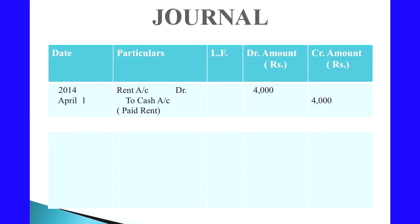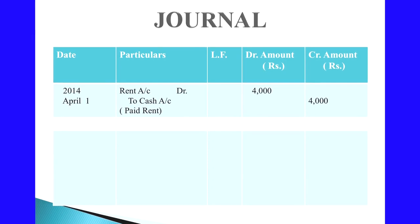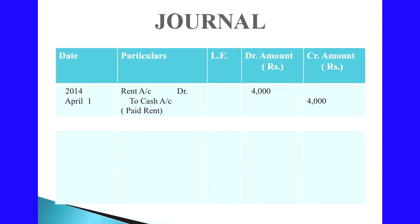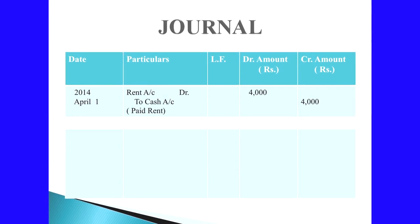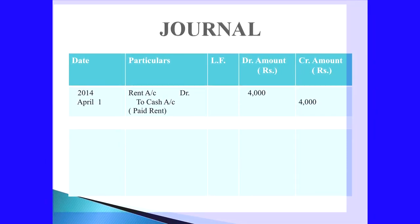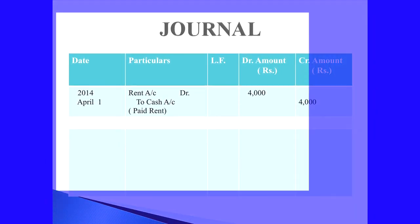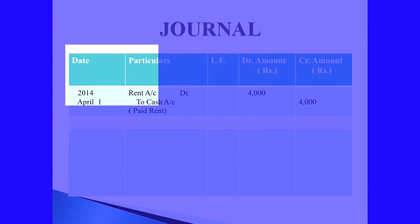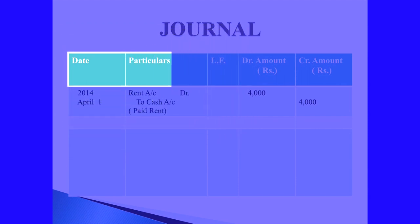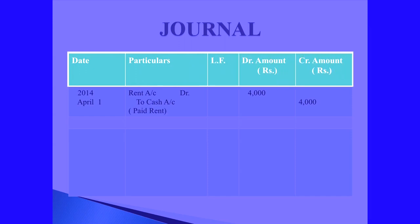In the slide, you can see the format of a journal. Every page of the journal has a particular format as given in the slide. It is a columnar book — each column is given a name: date, particulars, ledger folio, debit amount, and credit amount are the columns in the journal.